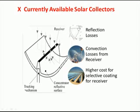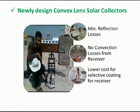Hence, as the temperature of receiver increases, the convection losses from receiver to surrounding are also increasing proportionally. And the higher cost of selective coating for these receivers adds cost to this solar collector.